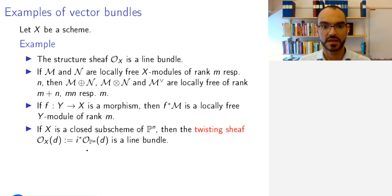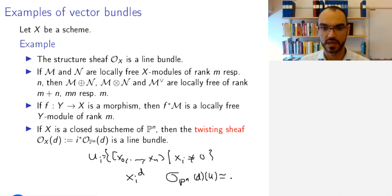Well, you can cover projective space by the usual open sets U_i, sets of all X_0 to X_N such that X_i does not vanish. And on that U_i, you can multiply by X_i to the power d, to exhibit an isomorphism locally between O_{P^N}(d) of U and O_{P^N}(0) of U. And this will be an isomorphism.